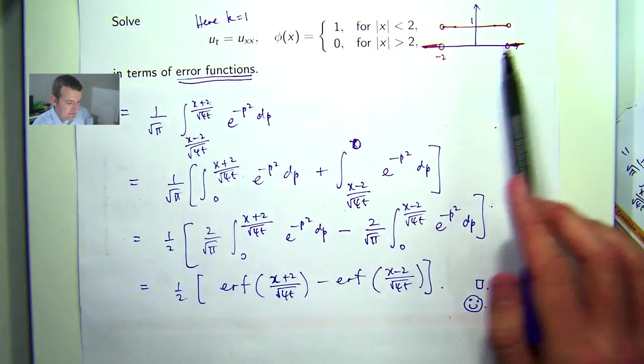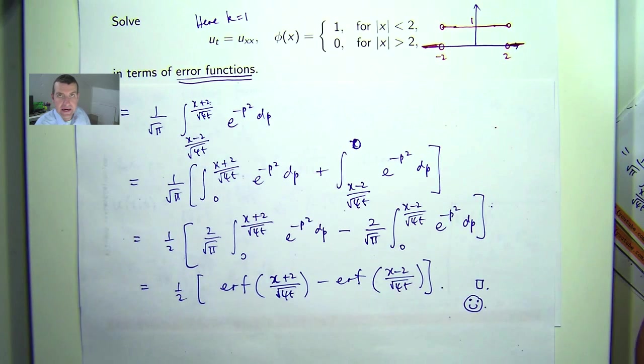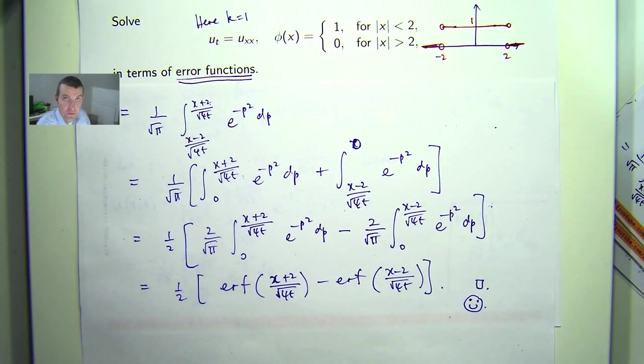Now, you can show, in general, that the solution to the heat equation with an even initial temperature will be an even function in position x.